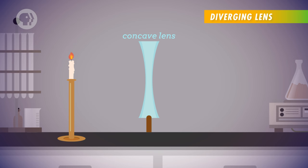And when we construct a ray diagram for a diverging lens, there are a few key differences. First of all, the focal point f is on the same side as the object, and f prime is on the opposite side.